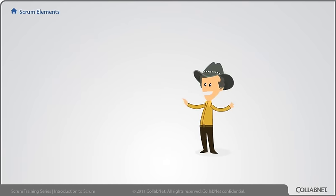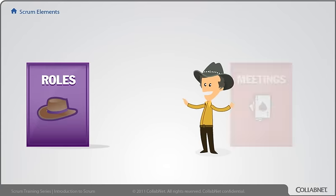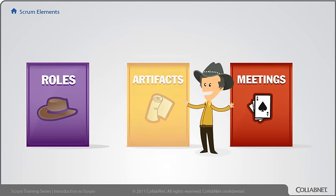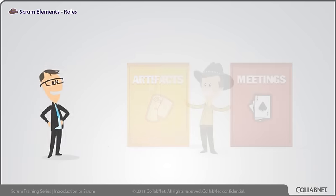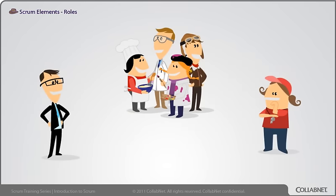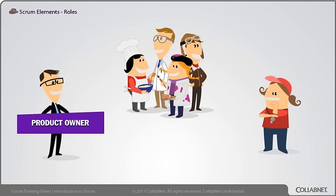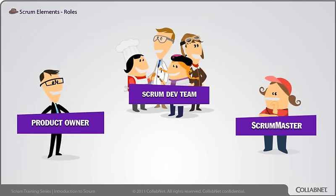Scrum provides a structure of roles, meetings, rules, and artifacts. Let's do a quick overview of them now. There are only three roles defined by Scrum: Product Owner, Scrum Development Team, and Scrum Master.